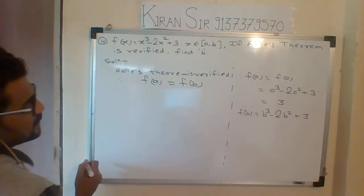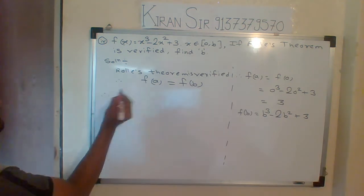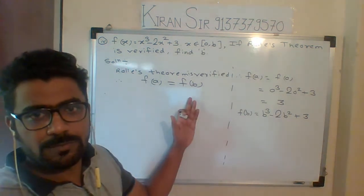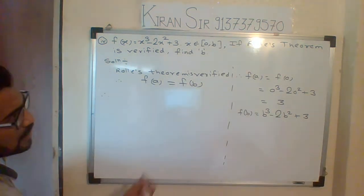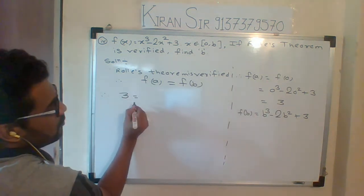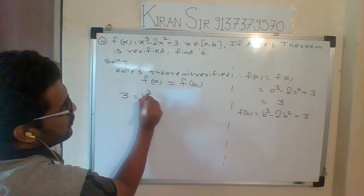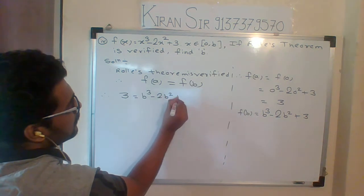But since what is the condition, since it is verified, f(a) equals to f(b). So f(a), what I will put? I will put the value of 3. And f(b), what I will put? b cubed minus 2b squared plus 3.